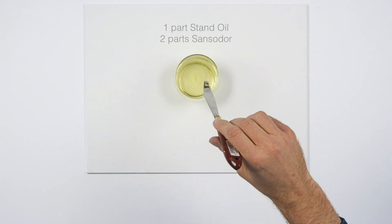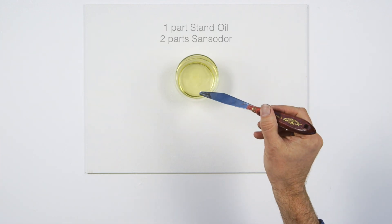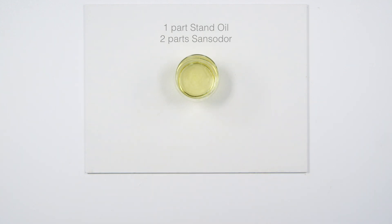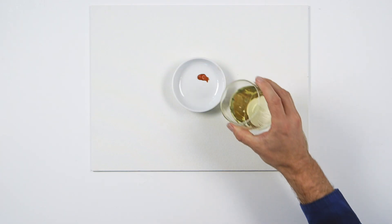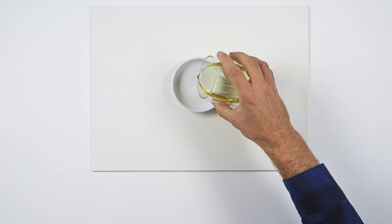I'm making a mixture of one part stand oil to two of Sansador to give me a glazing vehicle with an extended drying time. I'll thin this color with the mix.